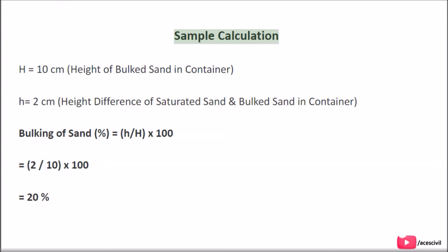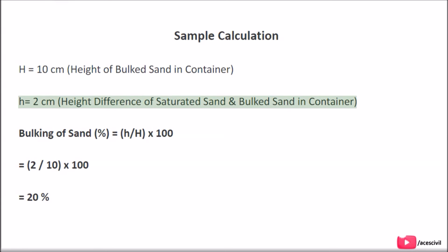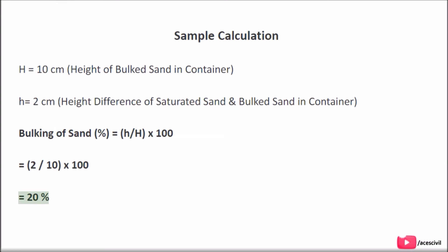Sample calculation: H = 10 cm (height of bulked sand in container). h = 2 cm (height difference of saturated sand and bulked sand in container). Bulking of sand (%) = h / H × 100 = 2 / 10 × 100 = 20%.